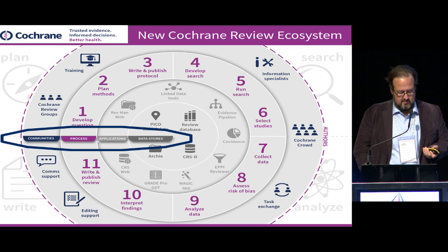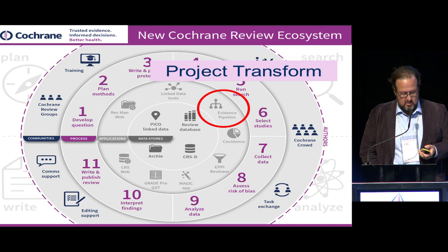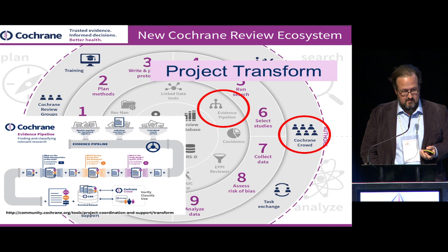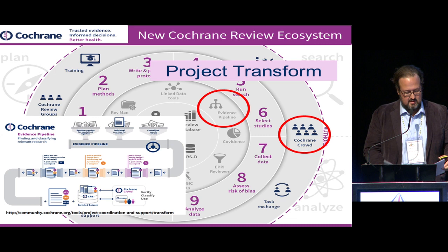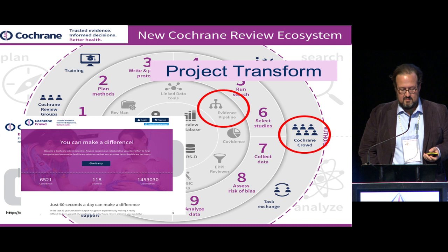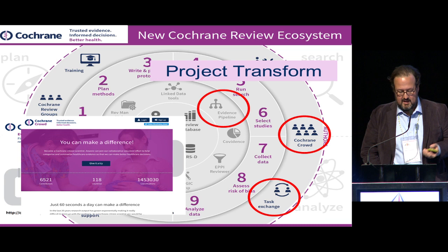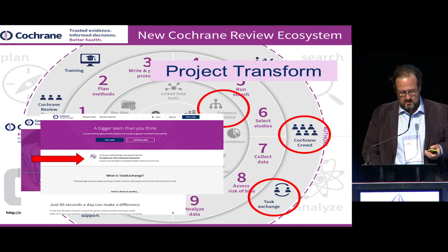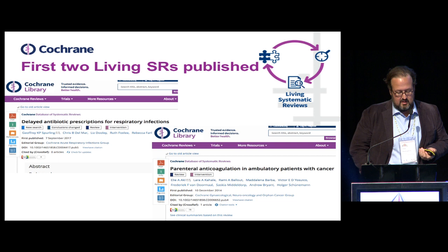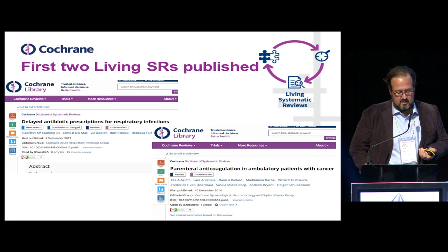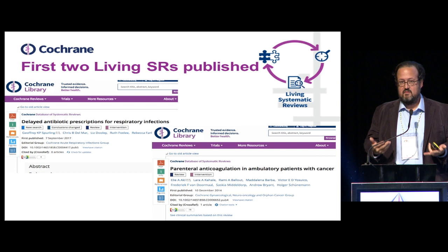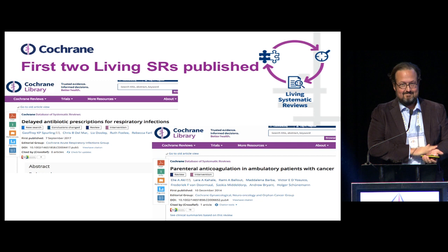We're doing this through projects like Project Transform and the Cochrane Platform, which has a component called Evidence Pipeline, using machine learning and text mining to make finding and classifying research more efficient. Cochrane Crowd is our citizen science crowdsourcing platform, engaging the public in microtasks that contribute to classifying evidence. Task Exchange is a peer-to-peer network connecting people who need help with their review with people who have the skills and time to do so. And more recently, connecting with guidelines — recognizing our partnership with GIN. Finally, the Living Systematic Review Network, with the first two Living Cochrane Systematic Reviews just published last week in the Cochrane Library.